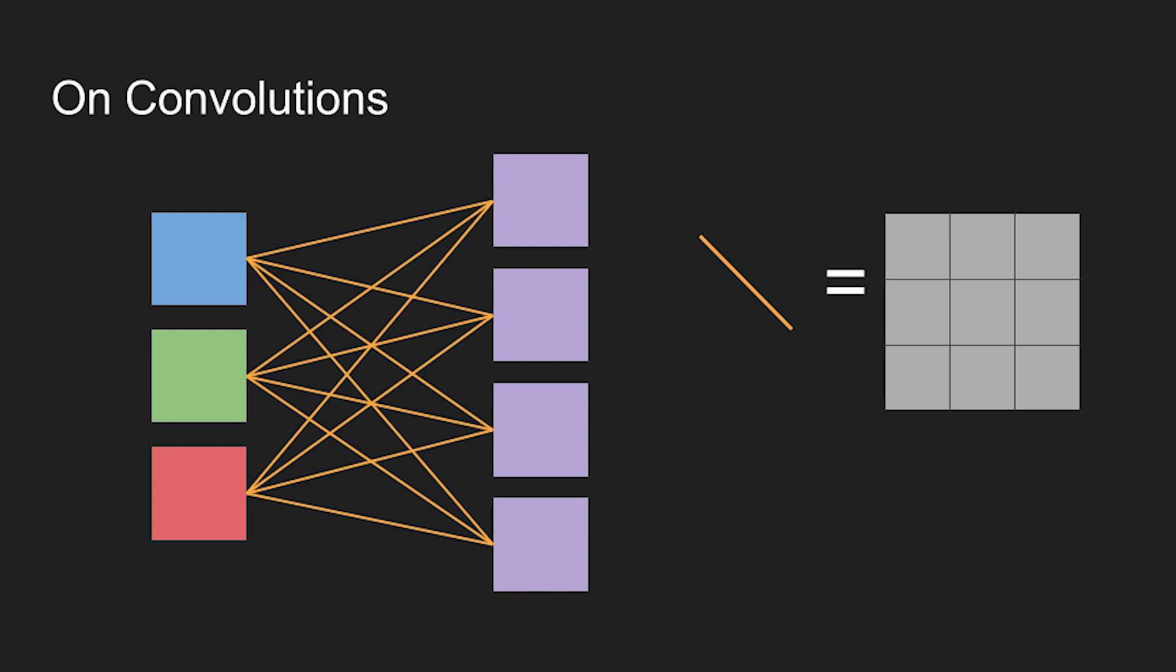Here is an example of what a convolution layer might look like going from one set of feature maps to the next. Each line represents some convolutional kernel. This kernel goes over the entire feature map but for simplicity they are simply represented here as lines from one feature to the next.